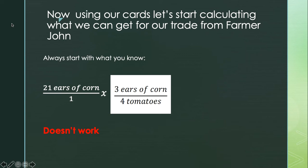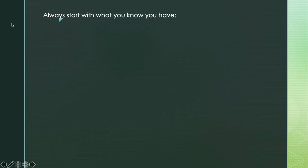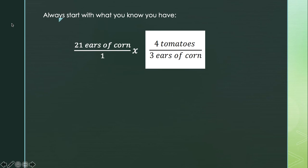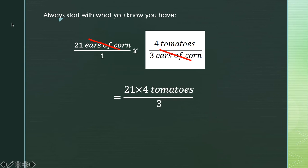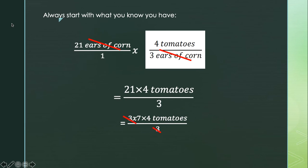So we're going to try a different conversion factor. Instead of three ears of corn on top and four tomatoes on the bottom, we're going to use four tomatoes on top and three ears of corn on the bottom. Starting again with 21 ears of corn over 1, and flipping the conversion factor, I can now cancel ears of corn because it appears on top and on bottom. What I have left on top is 21 times four tomatoes, and on the bottom is 1 times 3. I can rewrite 21 as 3 times 7, cross off the threes, and I'm left with 7 times 4 tomatoes, which is 28 tomatoes.